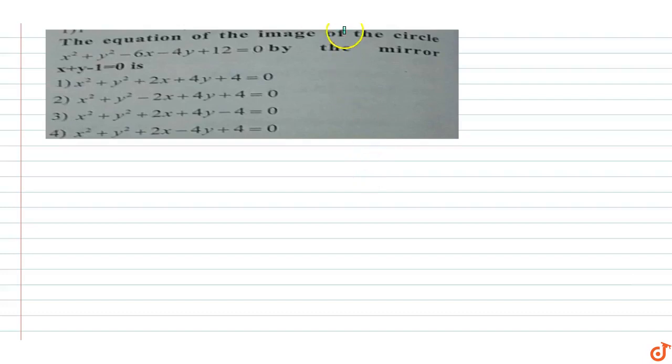In this question, find the equation of the image of the circle x² + y² - 6x - 4y + 12 = 0 by the mirror x + y - 1 = 0. We need to find the image of the circle with respect to this mirror line.